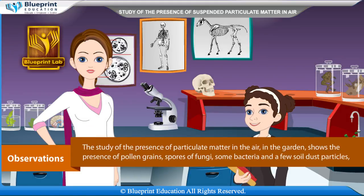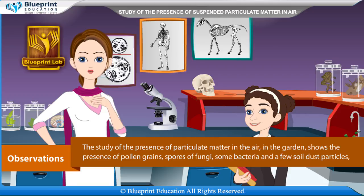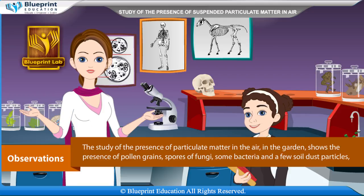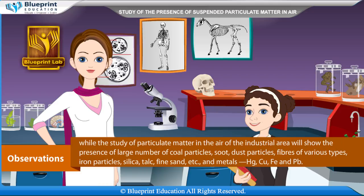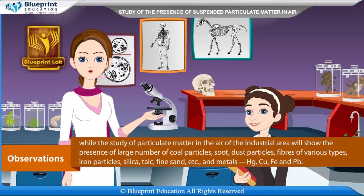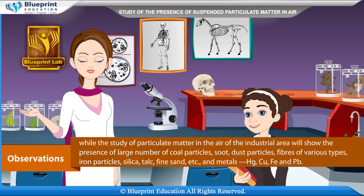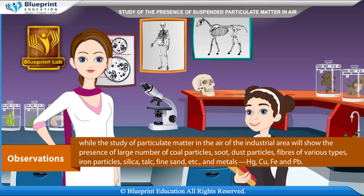Observations: The study of particulate matter in the air of a garden shows the presence of pollen grains, spores of fungi, some bacteria and a few soil dust particles. While the study of particulate matter in the air of an industrial area shows the presence of a large number of coal particles, soot, dust particles, fibres of various types, iron particles, silica, talc, fine sand, metals, etc.